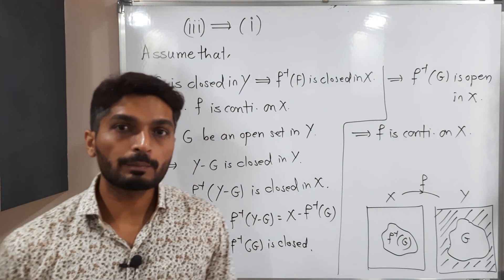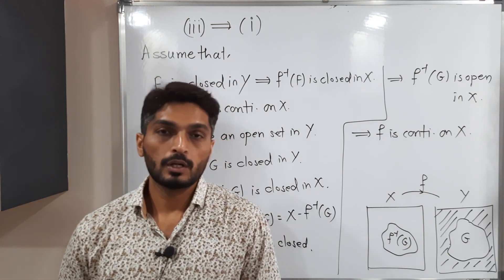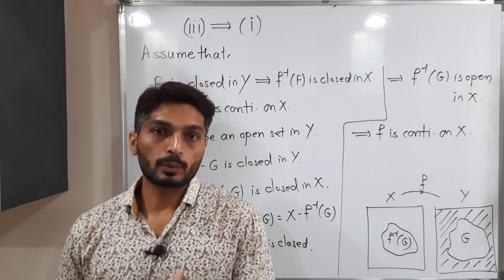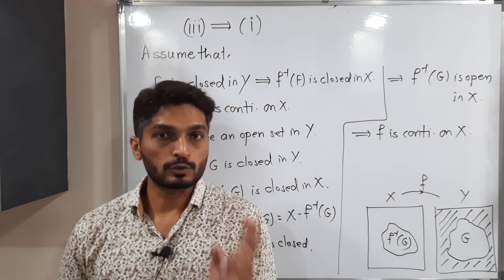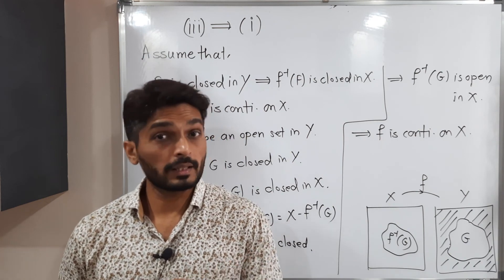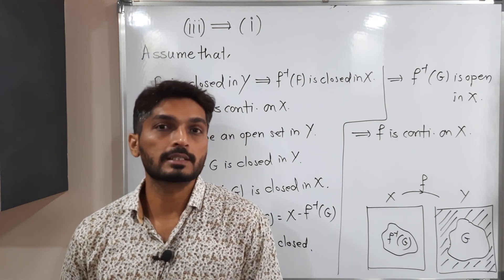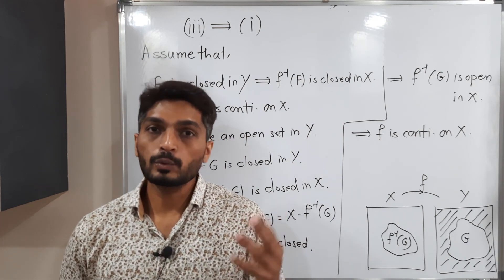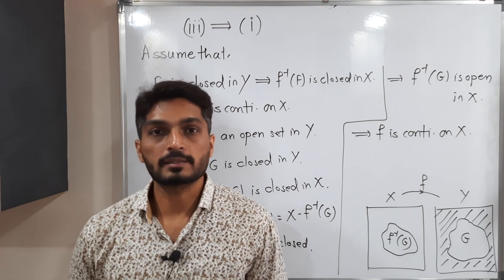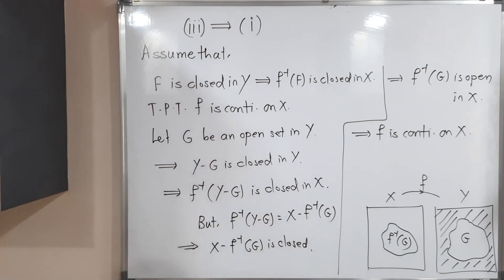Here we proved 3 implies 1 as well. So we proved: 1 implies 2, 2 implies 1, 1 implies 3, and 3 implies 1. Therefore, all three statements 1, 2, and 3 are equivalent. Thank you. Bye bye.